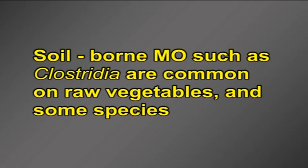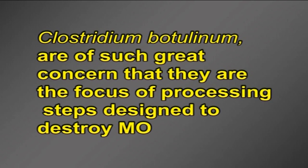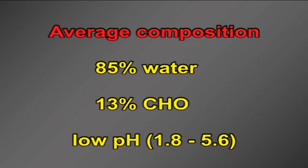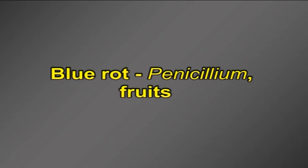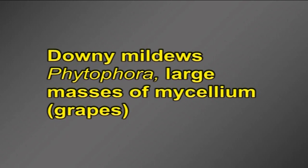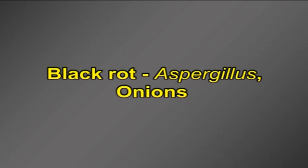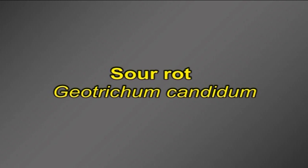Soil-borne microorganisms such as Clostridia are common on raw vegetables, and some species like Clostridium botulinum are of such great concern that they are the focus of processing steps designed to destroy microorganisms. Fruits: average composition is 85% water and 13% sugars, with a low pH of around 1.8 to 5.6. Specific spoilage organisms include blue rot caused by Penicillium, downy mildews by Phytophthora — large masses of mycelium in grapes — black rot by Aspergillus in onions, and sour rot by Geotrichum candidum.